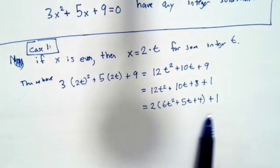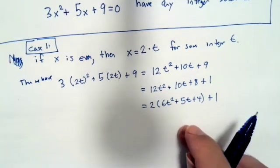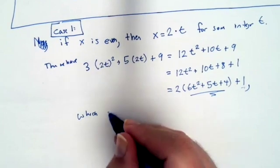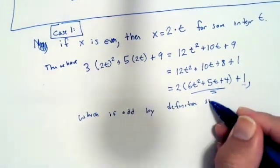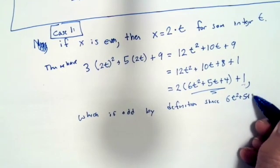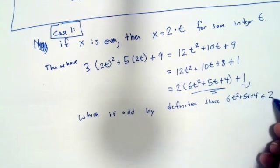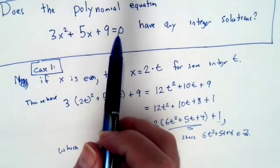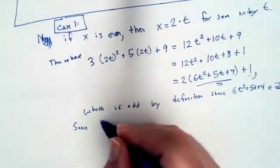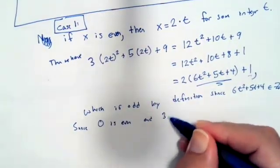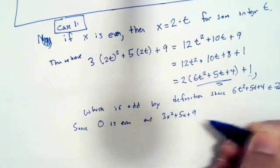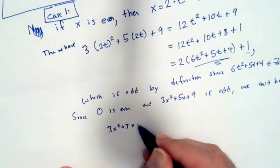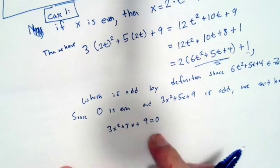And is this number even, odd, or can you tell? This is going to be odd — we have 2 times an integer plus 1, which is odd by definition, since 6t squared plus 5t plus 4 is an integer. Why does this help? Well, I'm looking at whether or not this could be equal to 0, but 0 is even, because 0 is 2 times 0. Since 0 is even and 3x squared plus 5x plus 9 is odd, we cannot have 3x squared plus 5x plus 9 equals 0, because they have opposite parities.